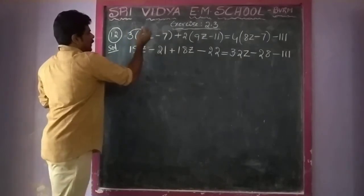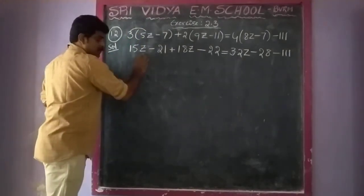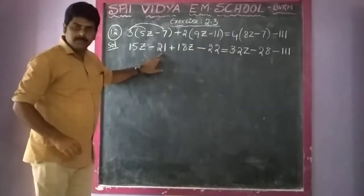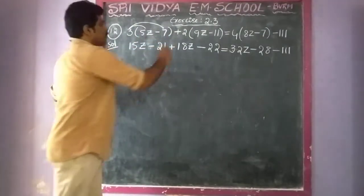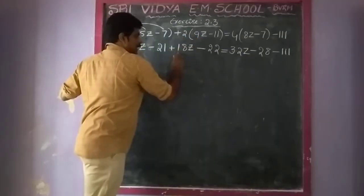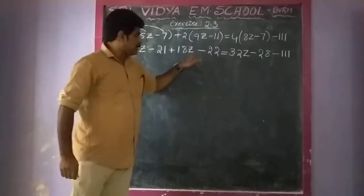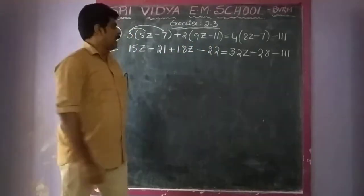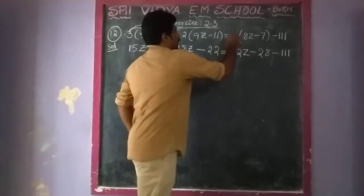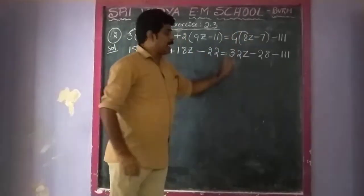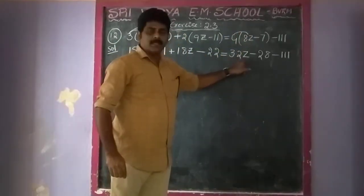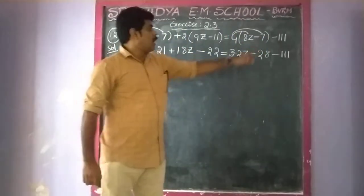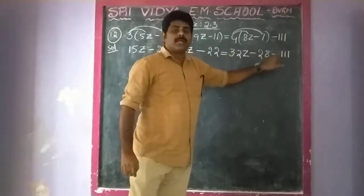First, 3 into 5 gives 15z. And 3 into 7 gives 21. Plus 2 into 9 gives 18z. Plus into minus gives minus, and 2 into 11 gives 22. On the right side, z equals 4 into 8 gives 32z, and 4 into 7 gives 28.